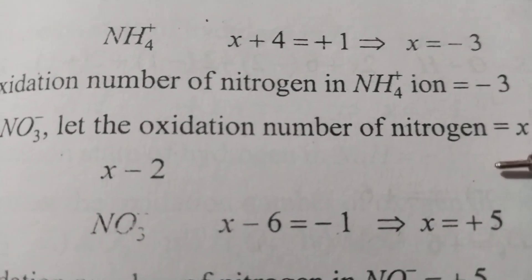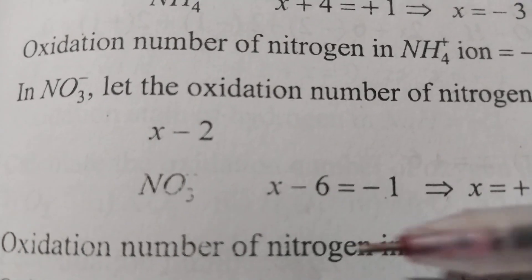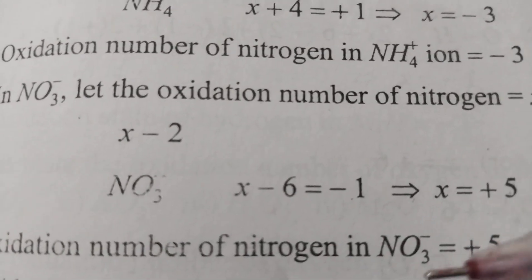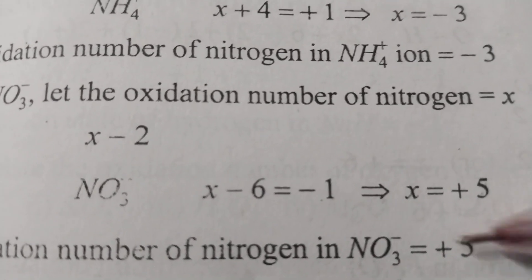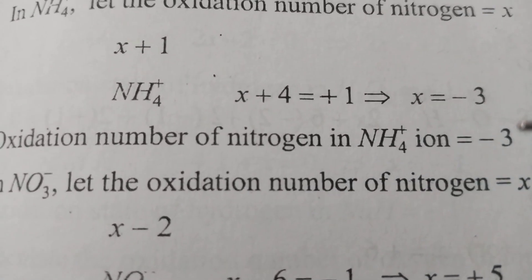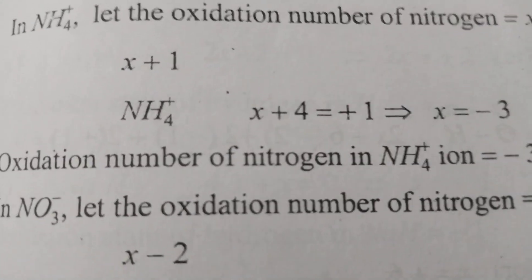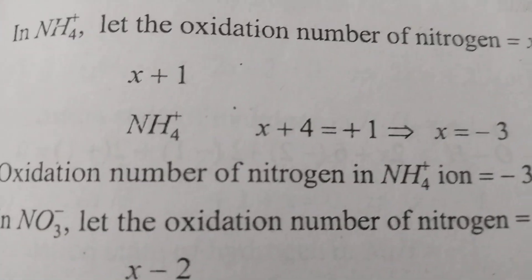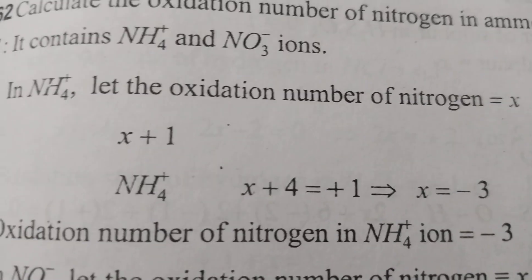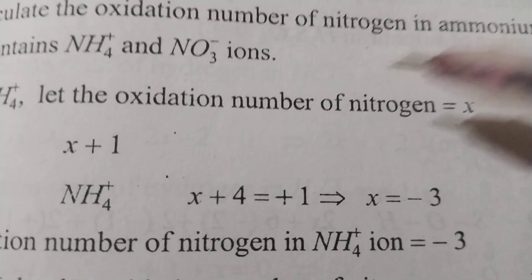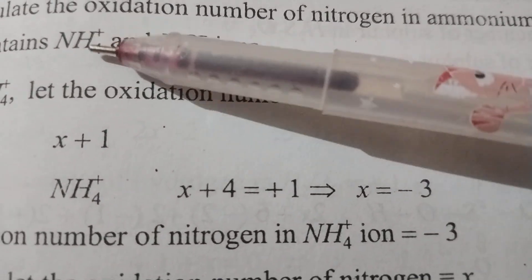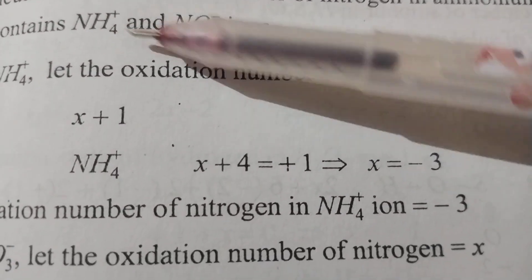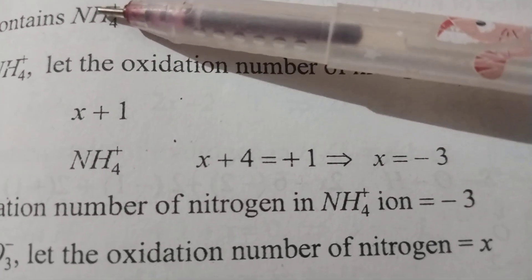Solving: x minus six equals minus one, so x equals plus five. The oxidation number of nitrogen in NO₃⁻ is plus five. So in NH₄⁺ nitrogen is minus three, and in NO₃⁻ nitrogen is plus five.